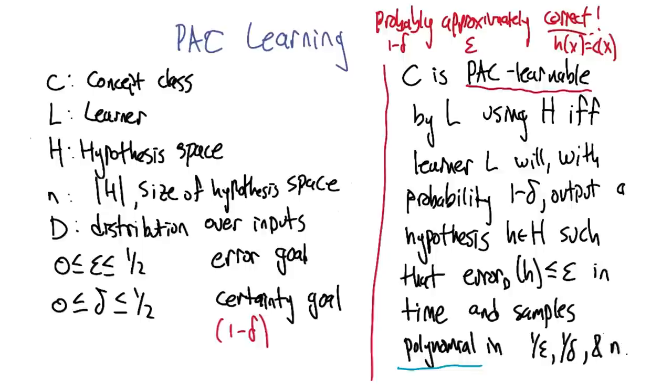Okay, so in other words, you're saying something is PAC-learnable if you can learn to get low error, at least with some high confidence. You can be fairly confident that you will have a low error in time that's sort of polynomial in all the parameters.